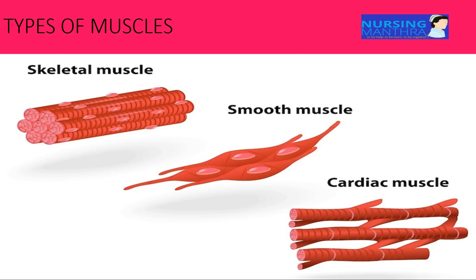The three types of muscles are: skeletal muscle, smooth muscle, and cardiac muscle. Skeletal muscles are striated voluntary muscles, attached to the bones. Smooth muscles are non-striated involuntary muscles that control the action of the gut and blood vessels. Cardiac muscles are also involuntary and are found only in the heart.